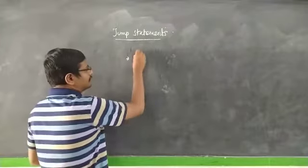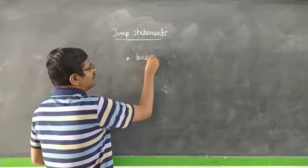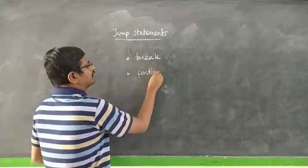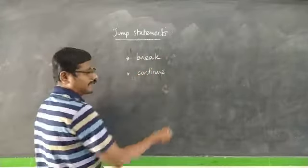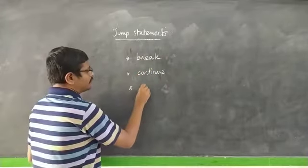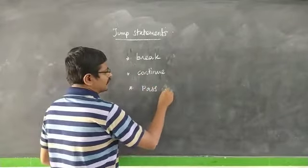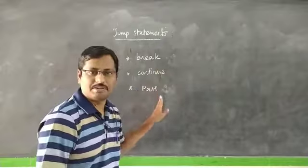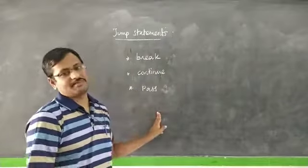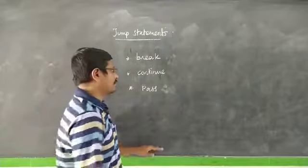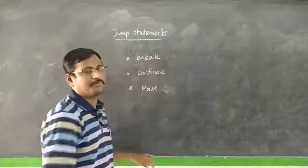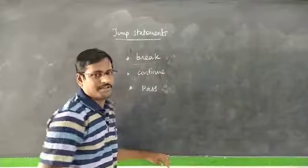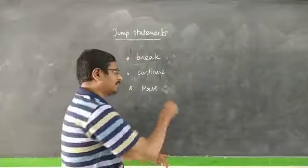The first one is the break statement, the second one is the continue statement, and the final one is the pass or null statement. Looking at jump statements: the first one is the break statement — it will terminate the loop.